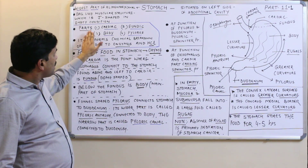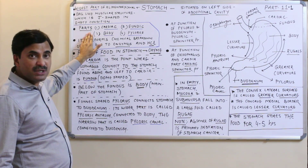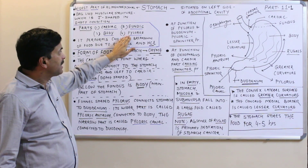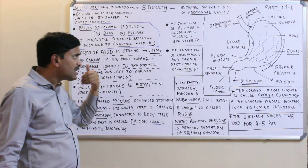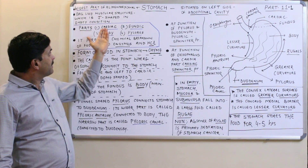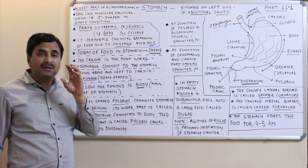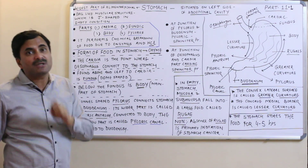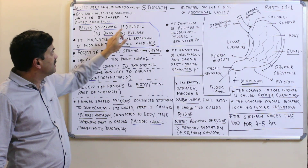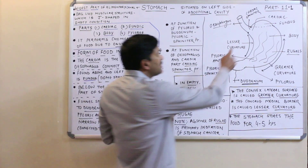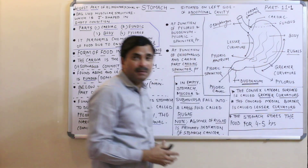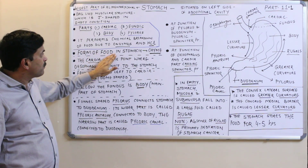The human stomach has four parts: cardiac, fundic, body, and pyloric. Generally in books only three parts are shown — cardiac, fundic, and pyloric — but specifically for the human stomach there are exactly four parts: cardiac, fundic, body, and pylorus.